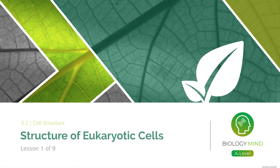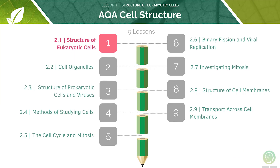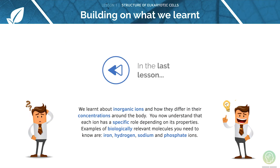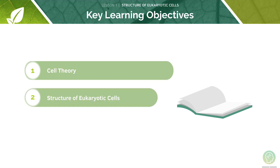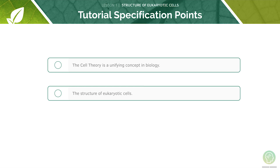Welcome to lesson one of nine in this tutorial: the structure of eukaryotic cells. This is our first video in our series of nine lessons on the topic of cell structure. In the last lesson we looked at the concentrations of inorganic ions in the body. Here are the key learning objectives for today's lesson: the first is to cover cell theory, and then we will look at the structure of eukaryotic cells. Here are the AQA specification points for this tutorial — feel free to pause the video now and read through them before we begin.